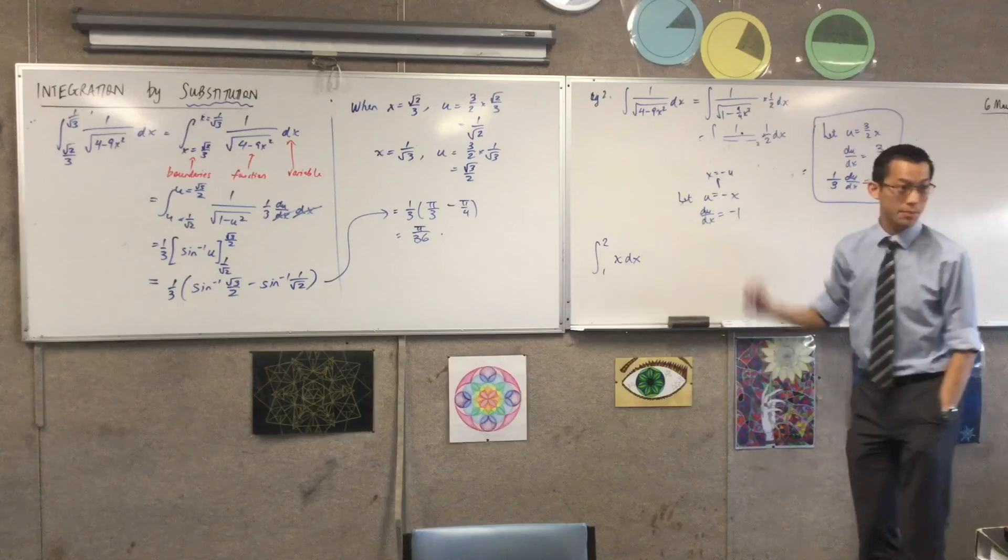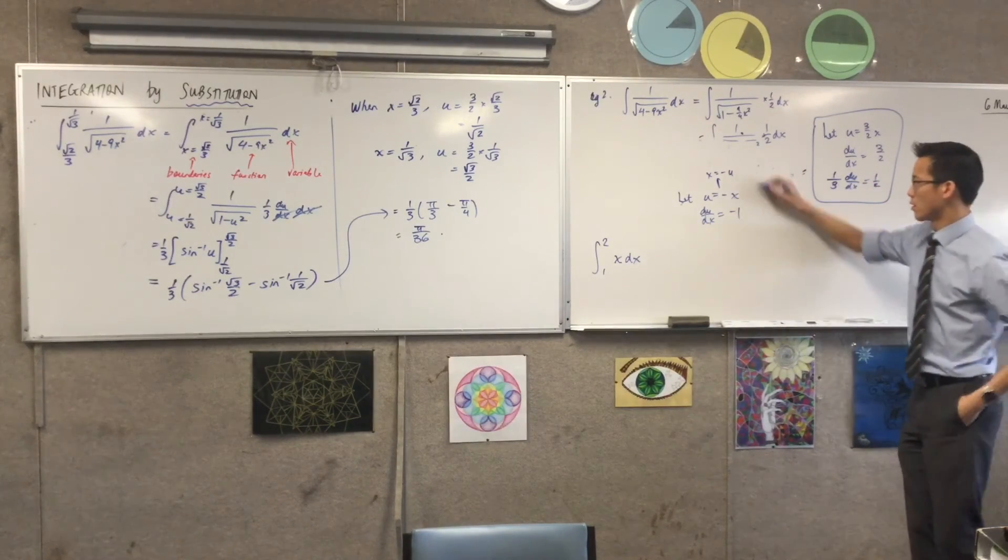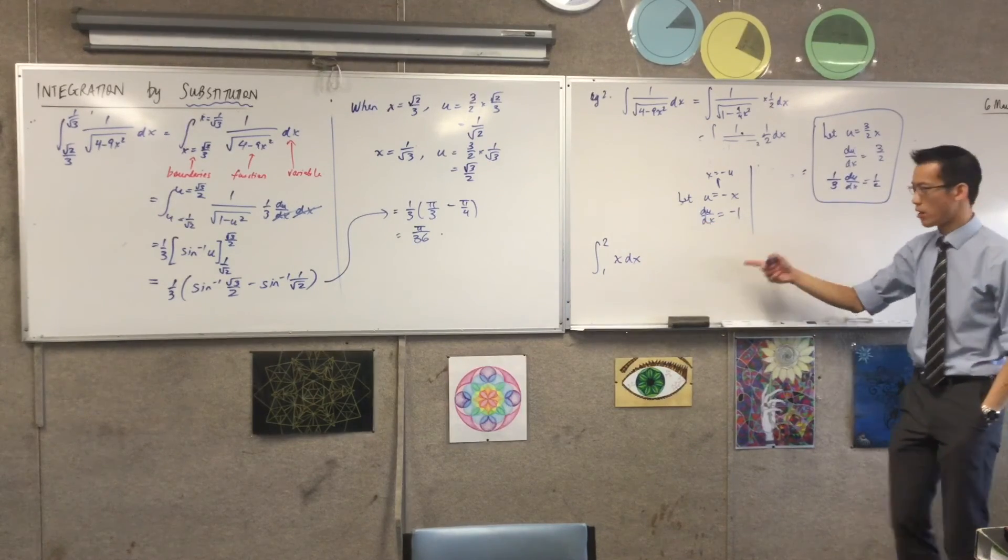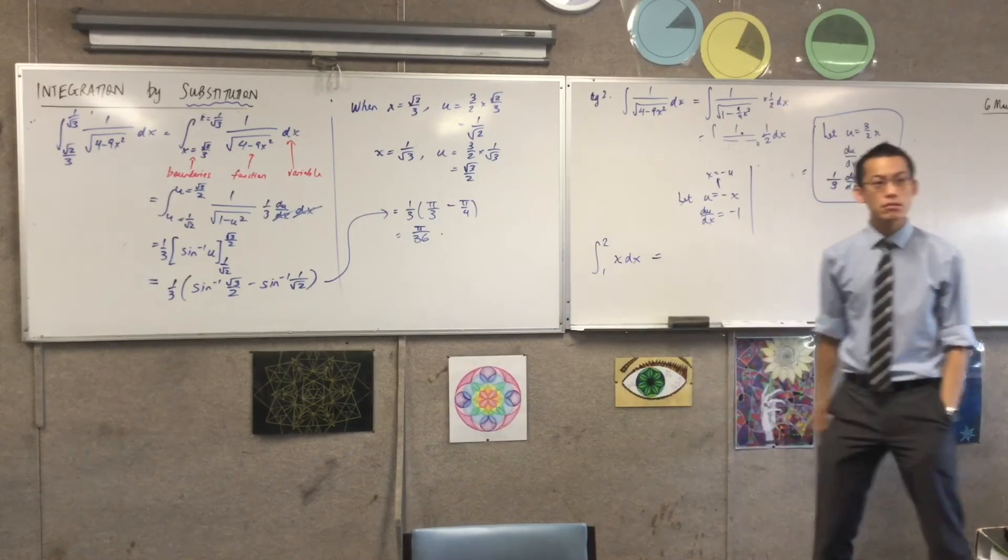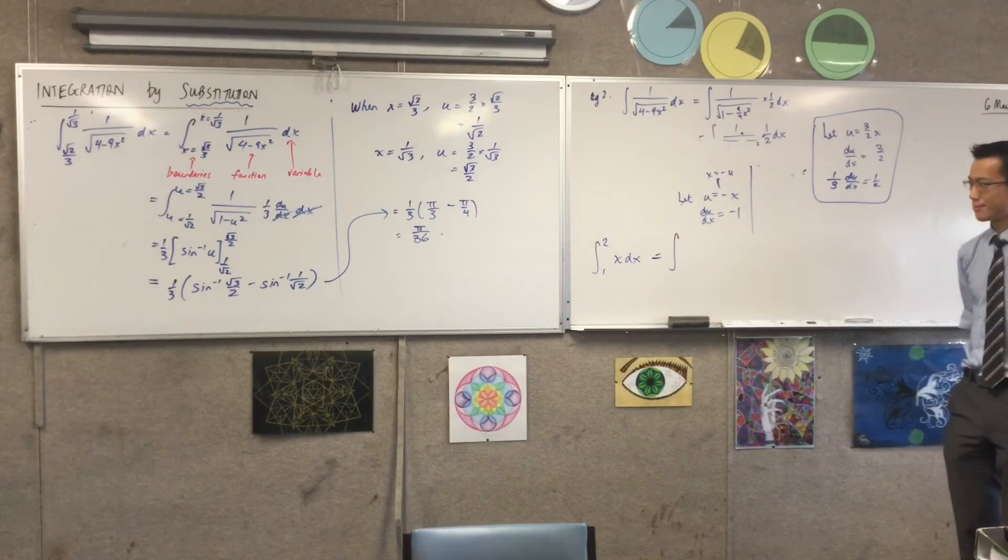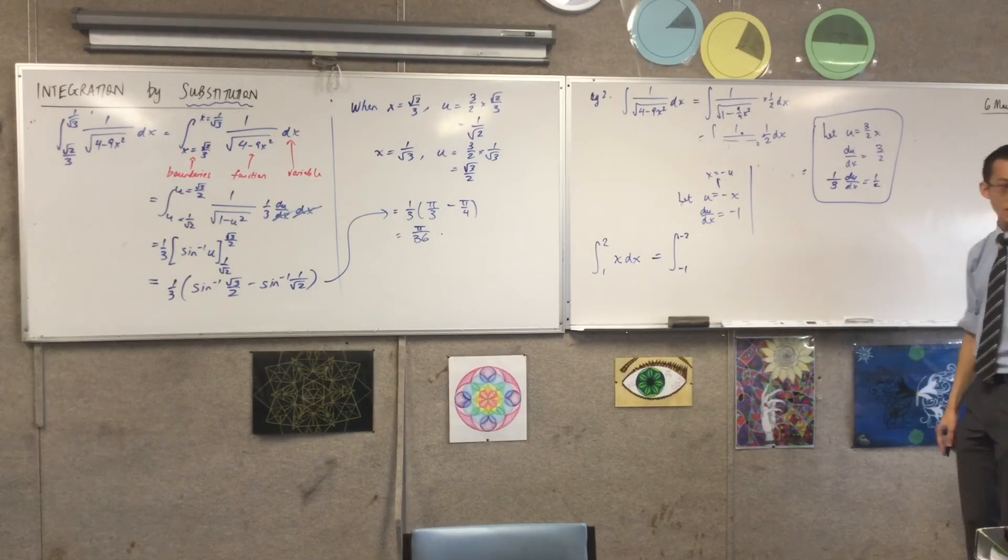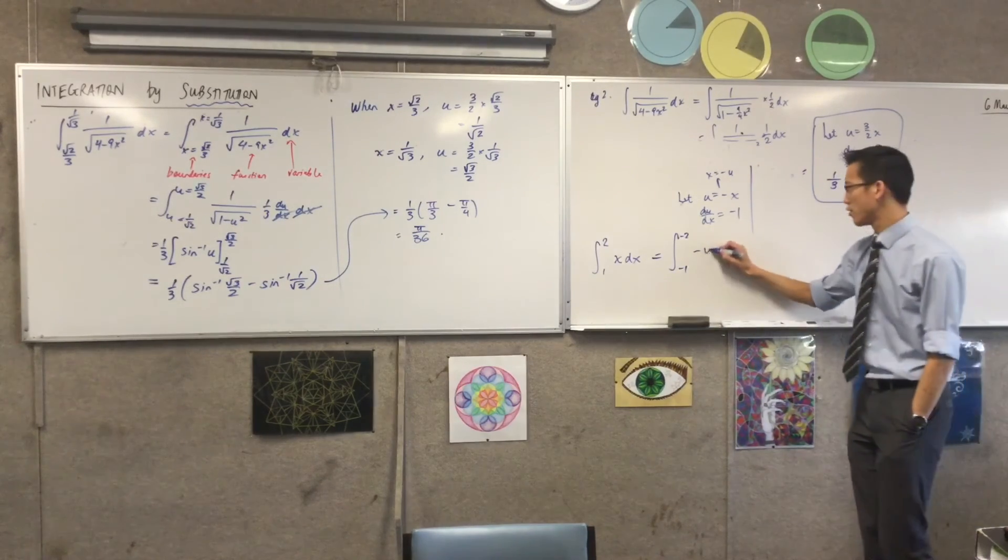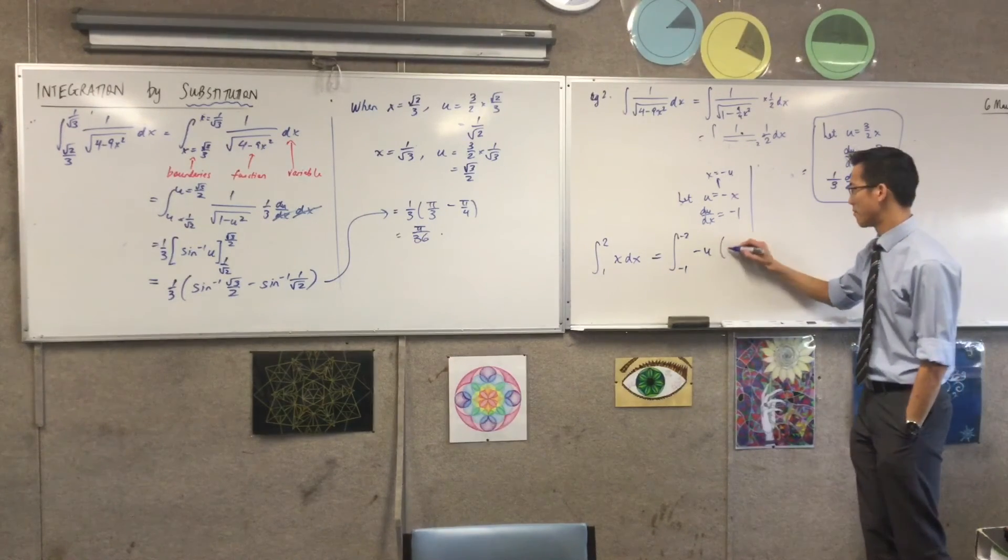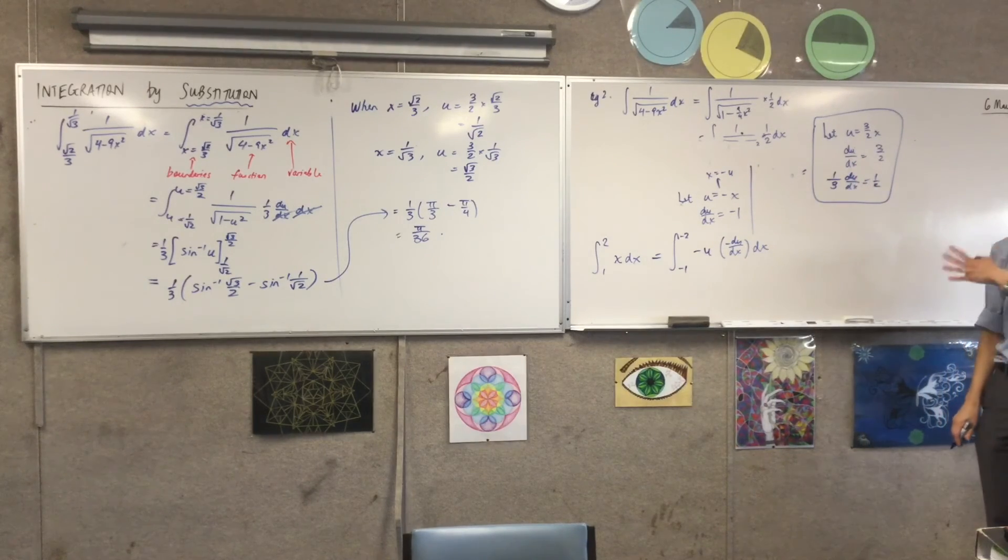And then when I say, well what are my boundaries going to be? Well, when x is equal to 1, u is going to be equal to -1. And when x is equal to 2, u is equal to -2. So what is this integral going to become? It's going to go from -1 to -2. What else is going to change? This is going to be -u, d(-u/dx). Minus du/dx. Does it look good so far? Have I done anything wrong? Cancel, cancel. This looks a bit weird.